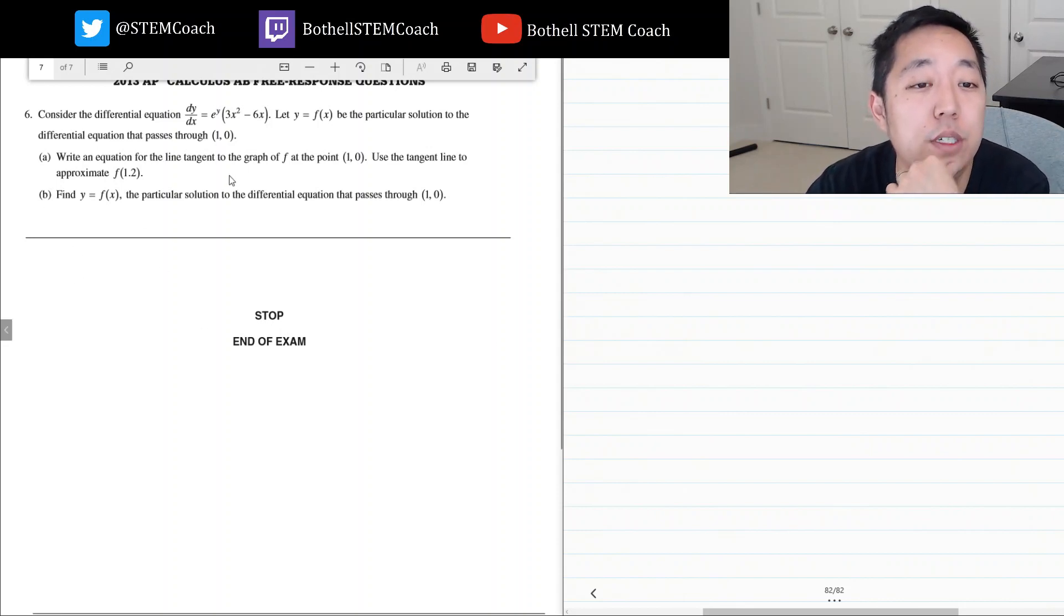Consider this differential equation. Let y equals f of x be a particular solution of the differential equation that passes through one zero. Write an equation for the line tangent to the graph at the point. Use a tangent line to approximate f of 1.2.